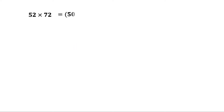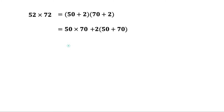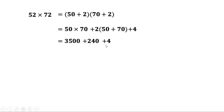Second problem: 52 into 72. This can be written as 50 plus 2 into 70 plus 2, which equals 50 into 70 plus 2 into 50 plus 70 plus 4. 50 into 70 is 3500. 50 plus 70 is 120. 120 into 2 is 240, plus 4. So 3500 plus 240 is 3740, plus 4 is 3744.